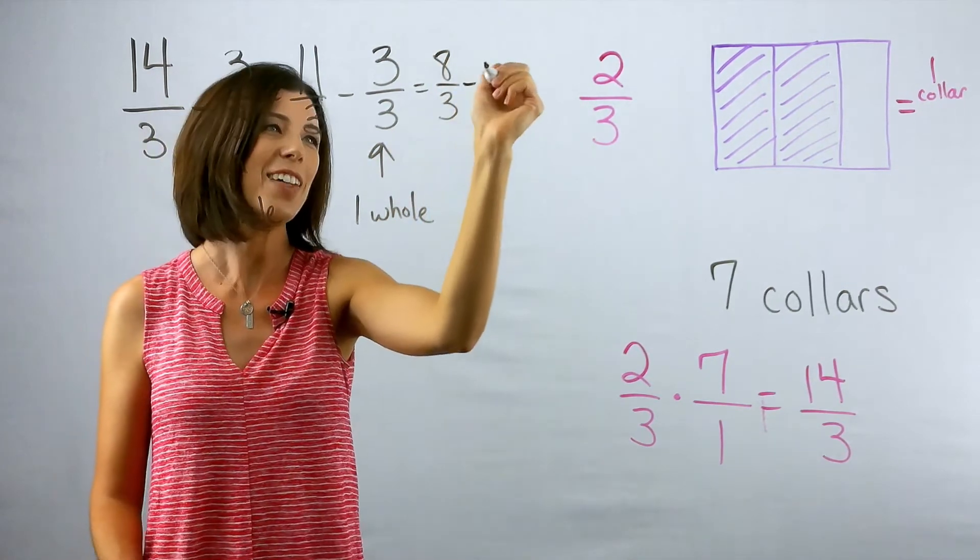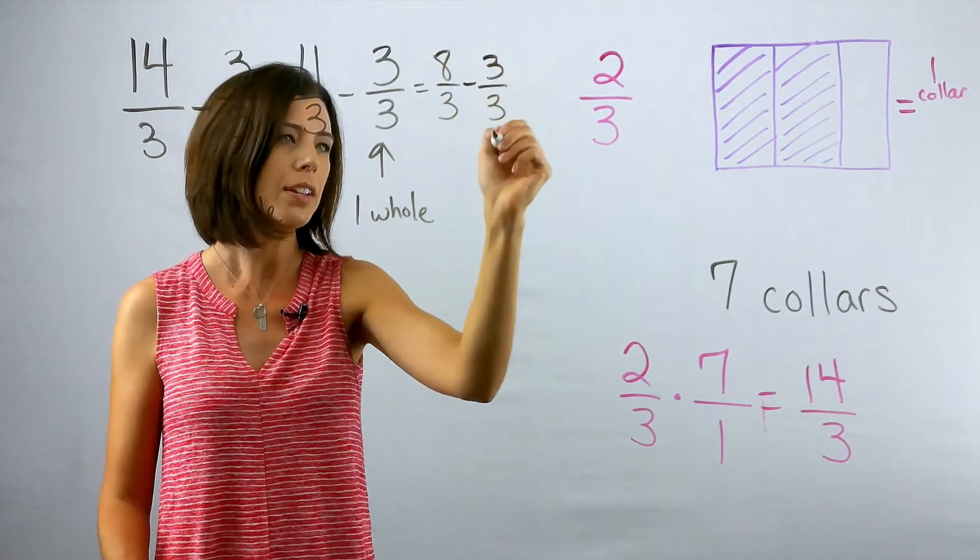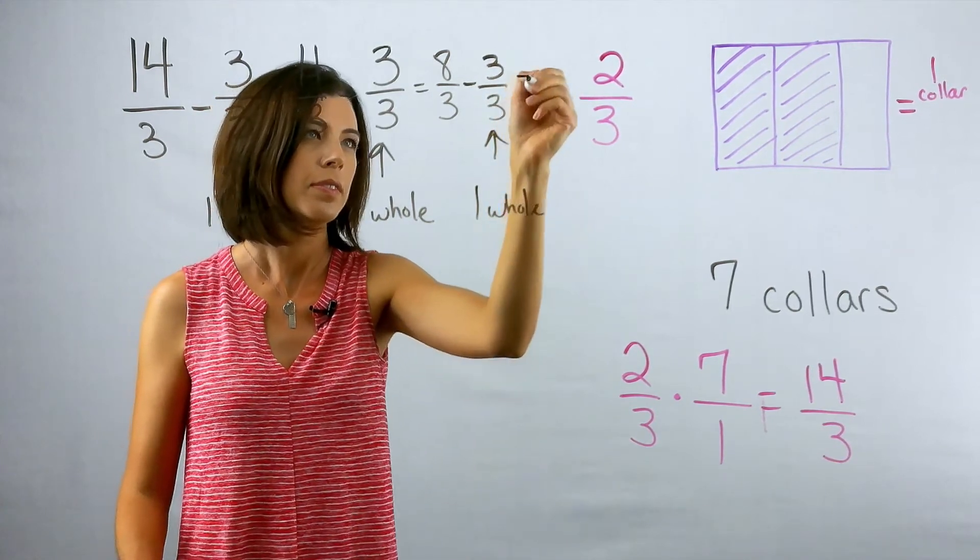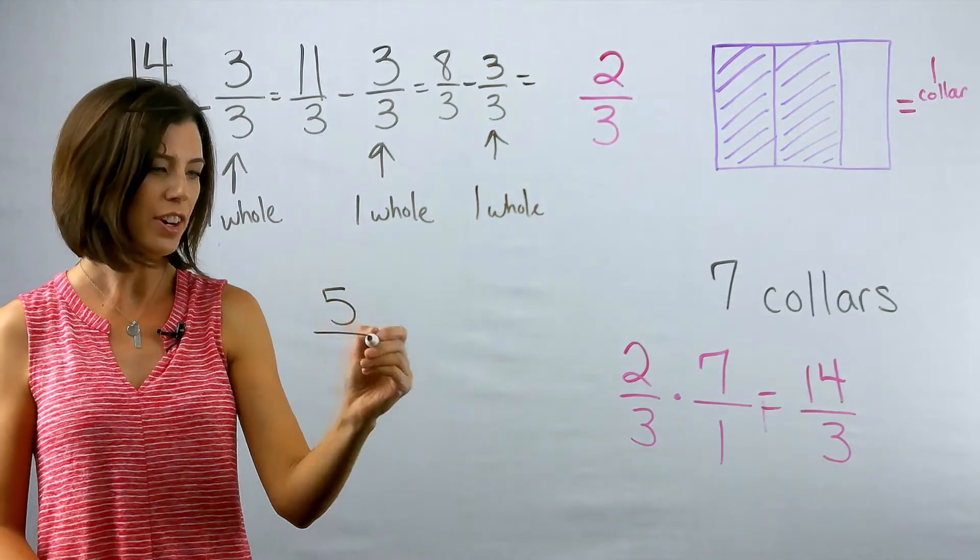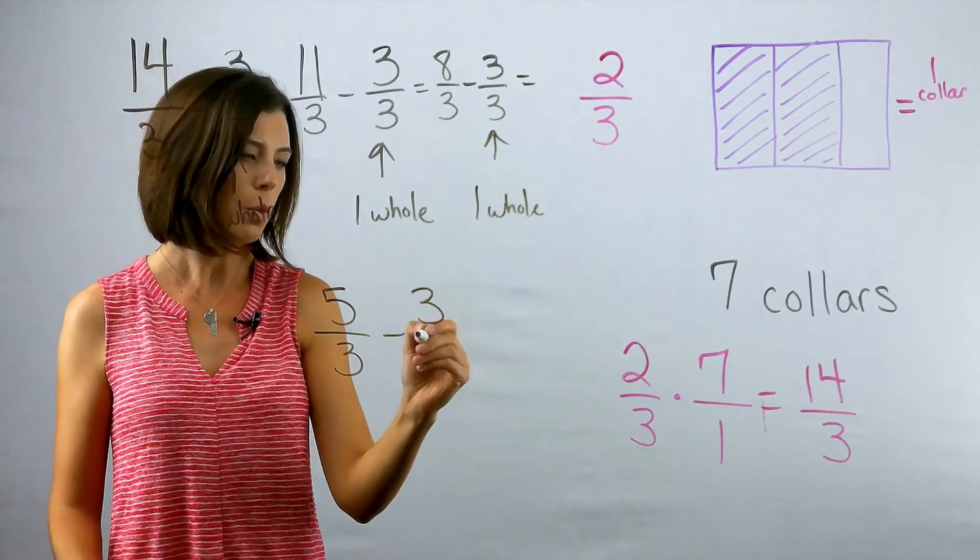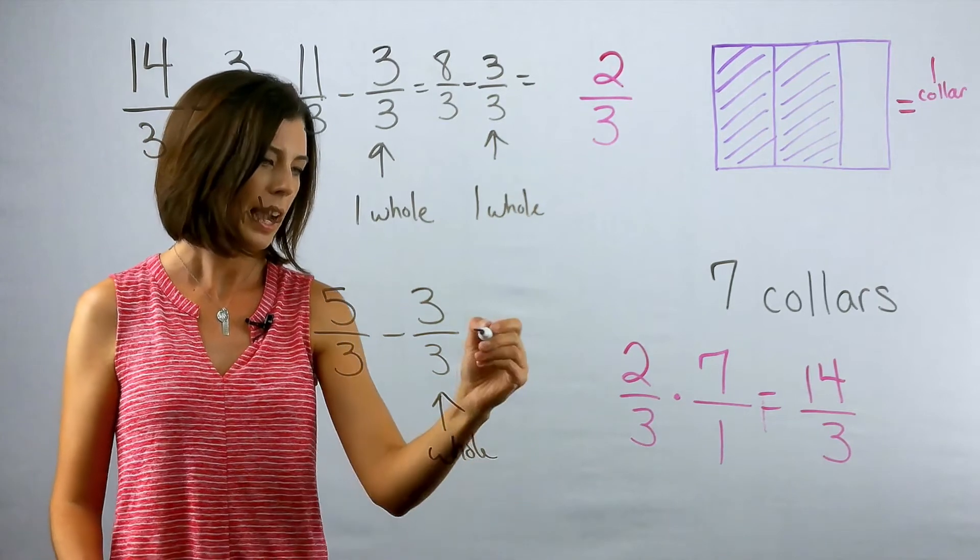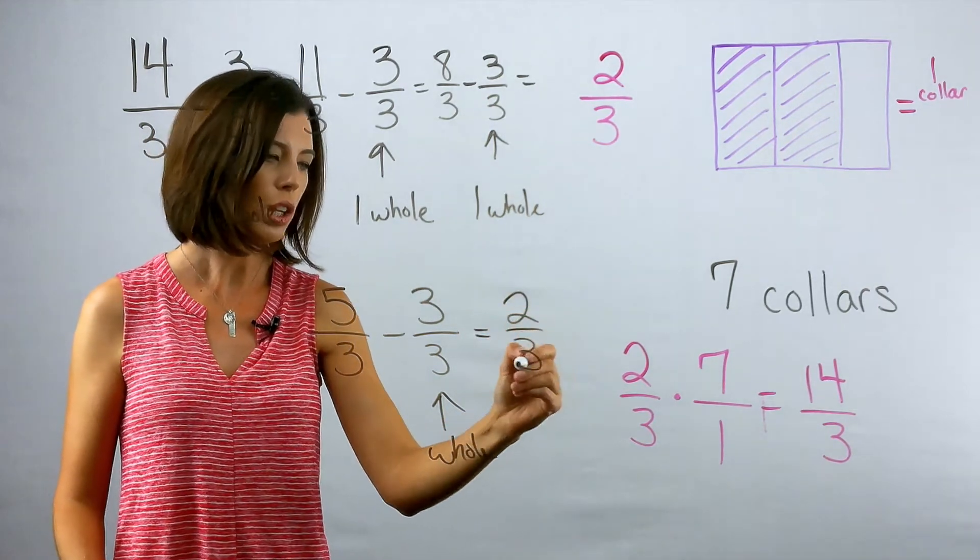Again, I can take out another three-thirds. You see where this is going? There's another whole. I've now got five-thirds. I can still take out one more whole, and I'm left with two-thirds.